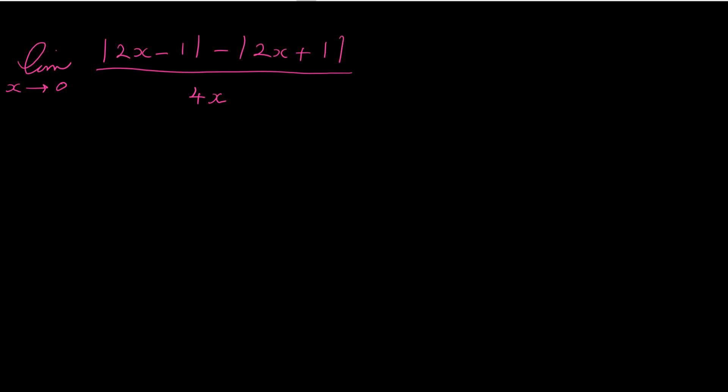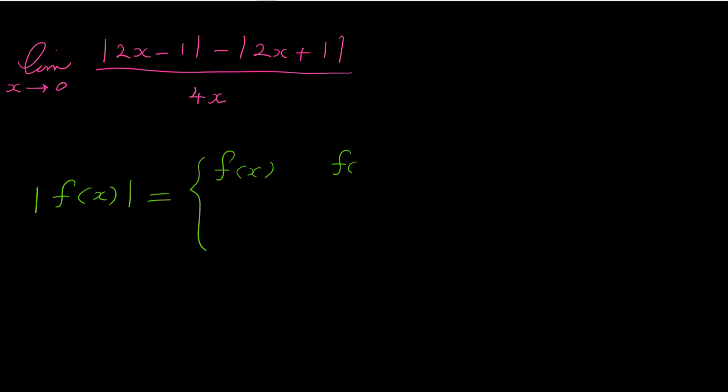The problem here is the absolute values in the numerator, so first we have to try to get rid of these absolutes. Let me remind you the definition of the absolute. To get rid of the absolute, remember that the absolute of an expression f(x) is either equal to f(x) if f is positive or zero.